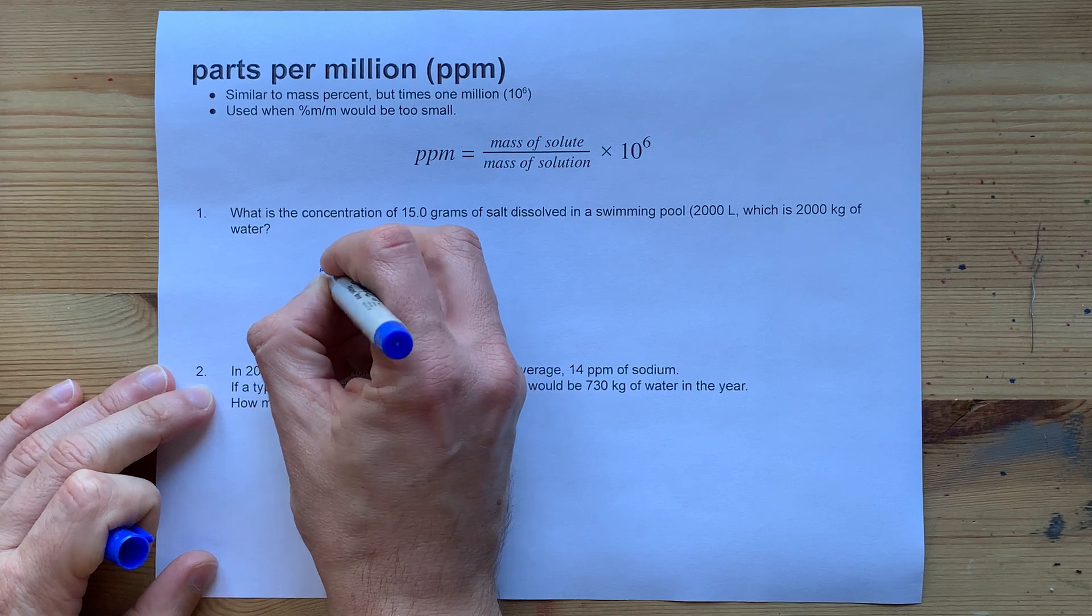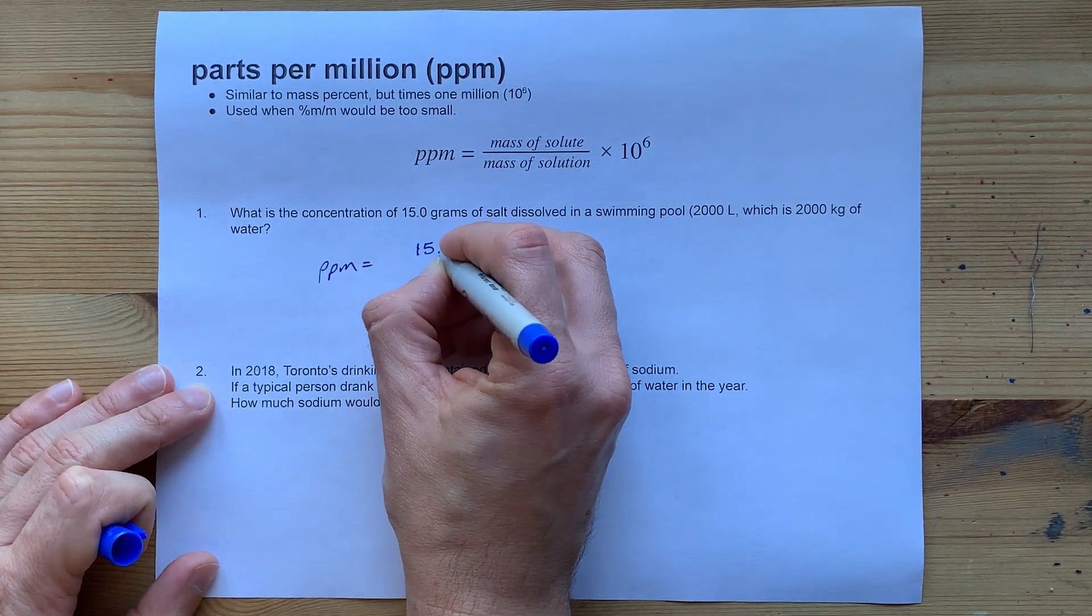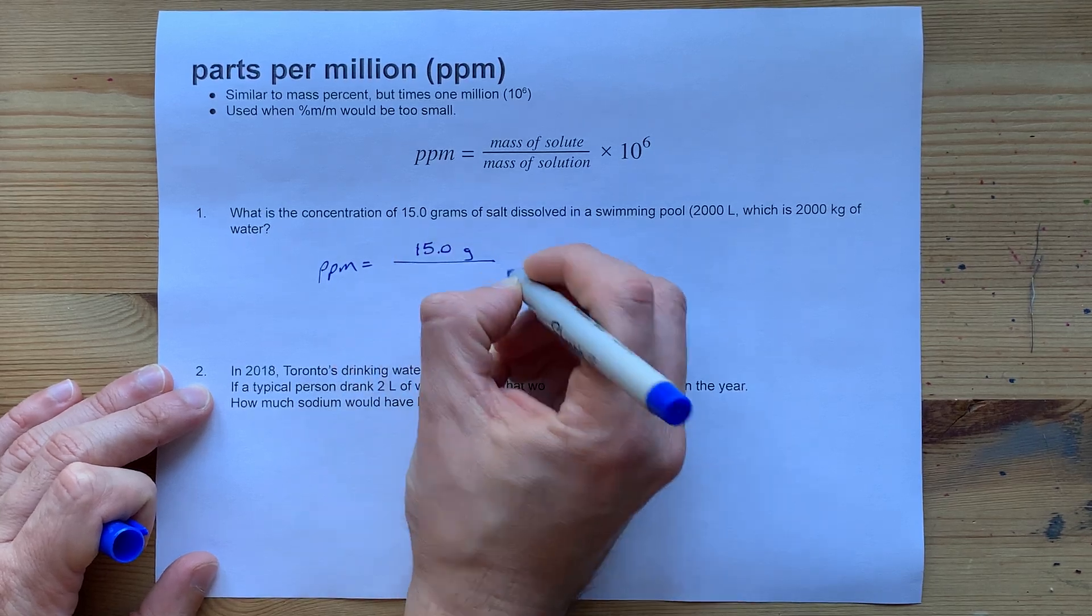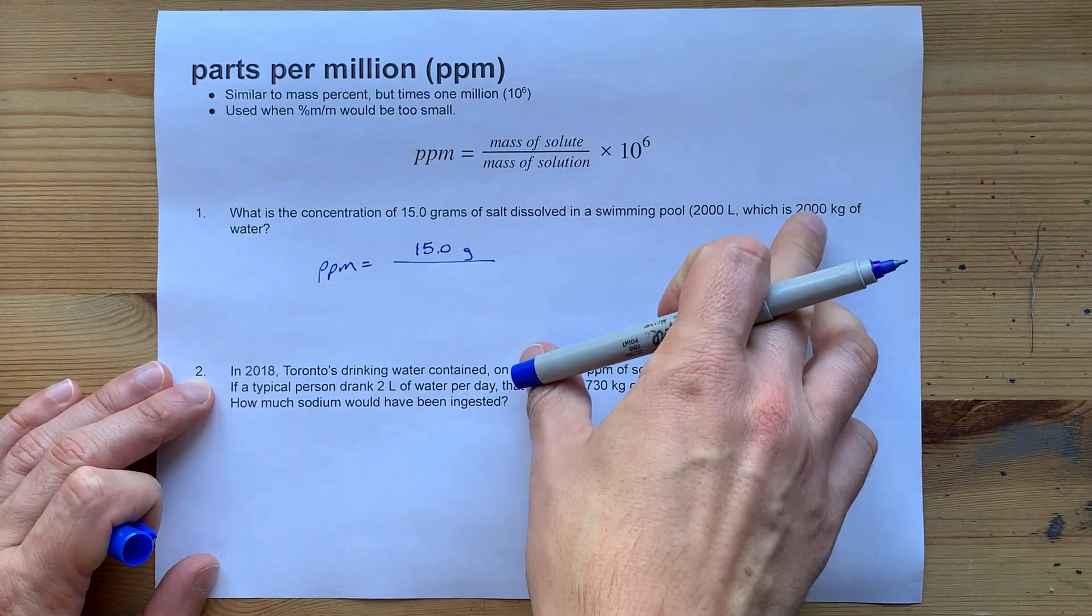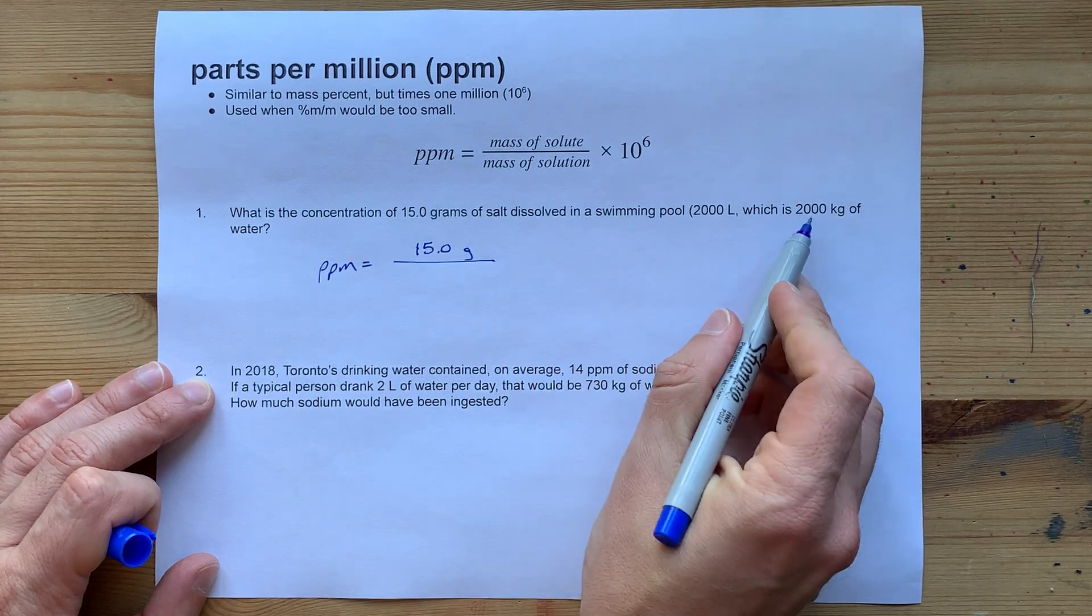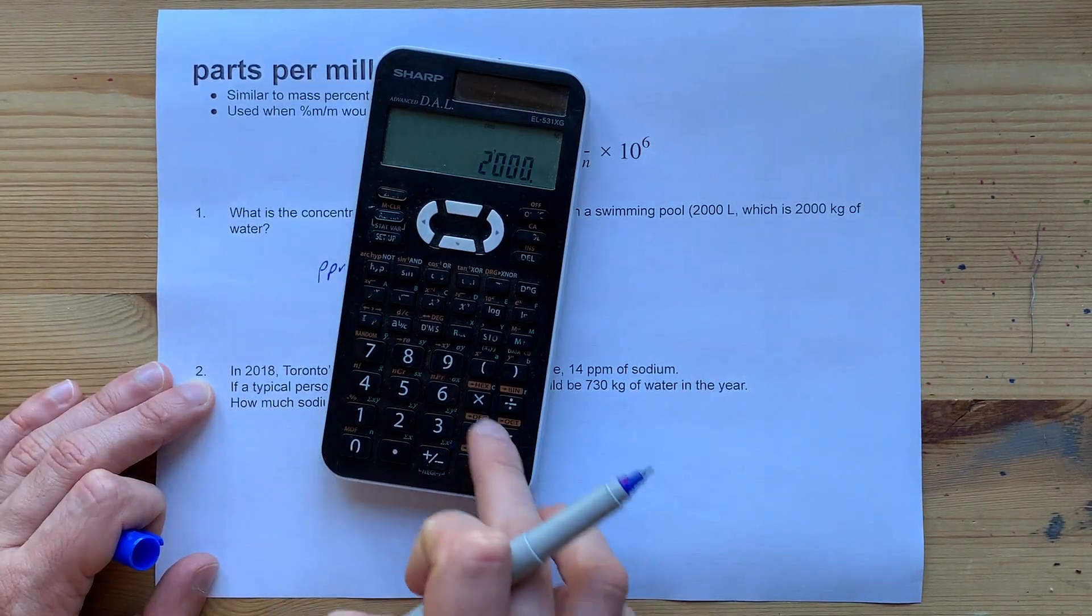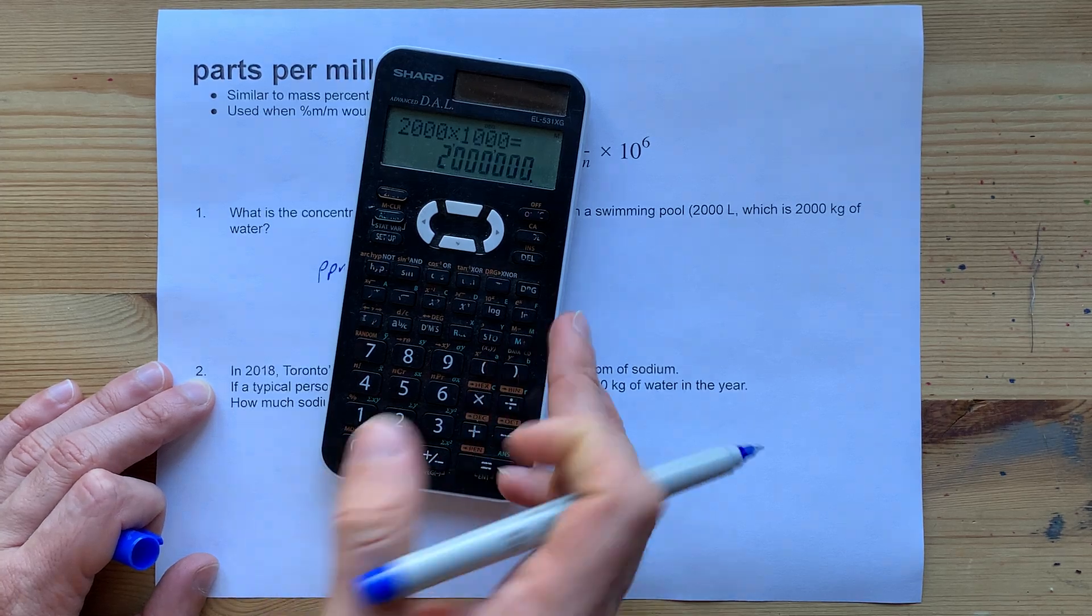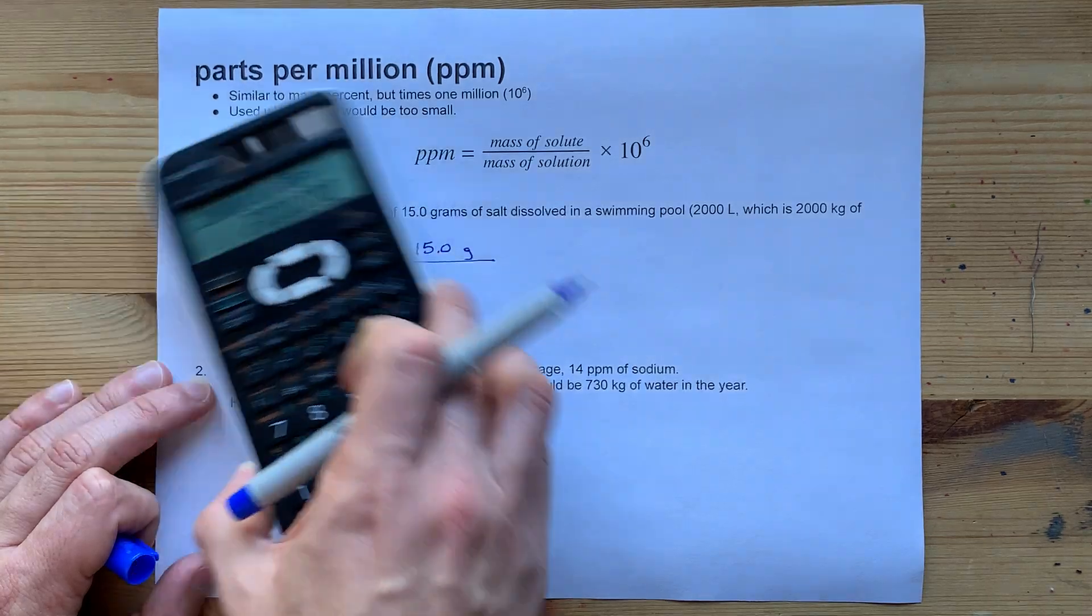ppm is mass of solute. I'm going to use 15 grams for my numerator. And mass of solution, which is technically the combination of the water and the salt together. Now, 2,000 kilograms, I'd have to multiply that by another 1,000 to get it in actual grams, because the units have to match for them to cancel here.